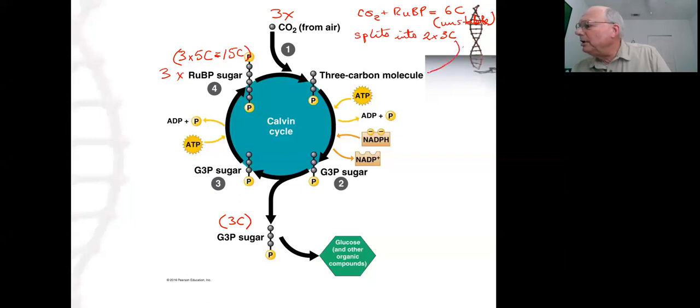CO2 plus RuBP equals 6C. The very unstable six-carbon molecule splits instantaneously into two three-carbon molecules. So we have three by six that then, when they all split, gives rise to six by three carbon. That's a total of 18 carbons in the form of the six three-carbon molecules.